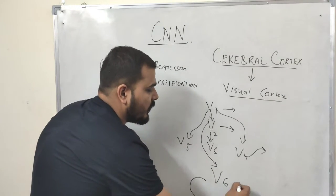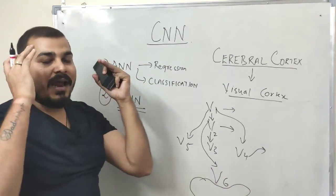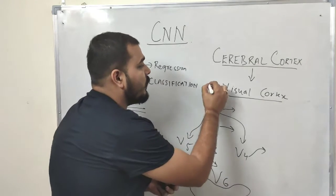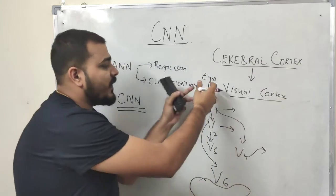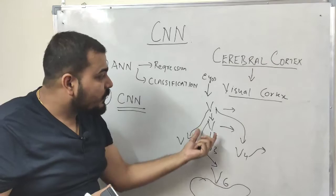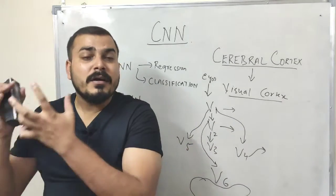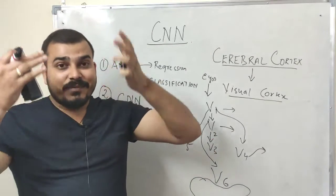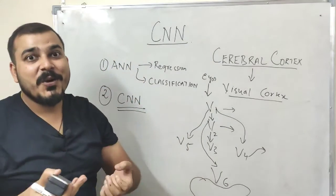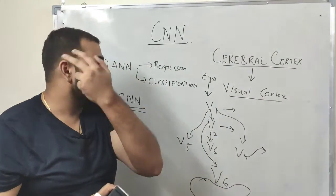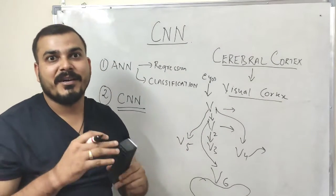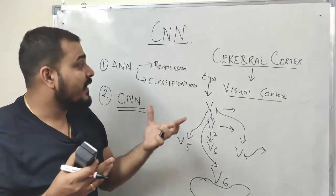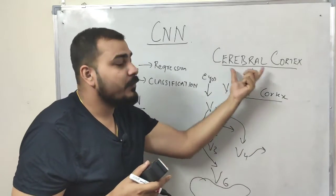Once all of this is done, our image gets created and we are able to visualize and say 'this is a cat' or 'this is a dog'. Just understand that as soon as information passes from our eyes through our sensory organs, it passes through all these layers where a little bit of information is extracted at each step, and finally we are able to see the image. This is how image visualization works in the human brain with the help of the visual cortex and cerebral cortex.